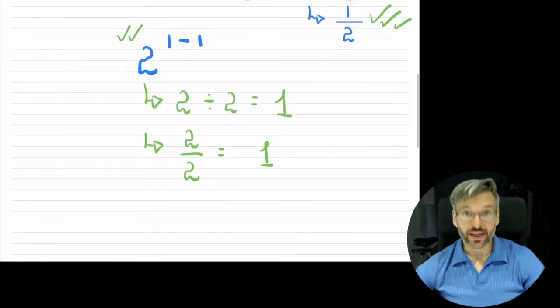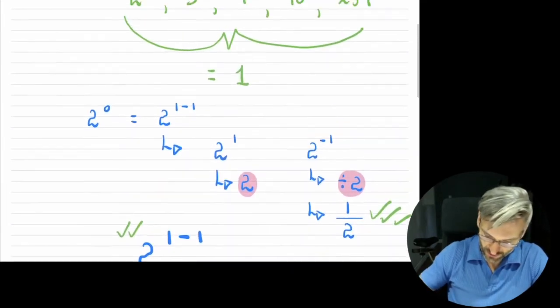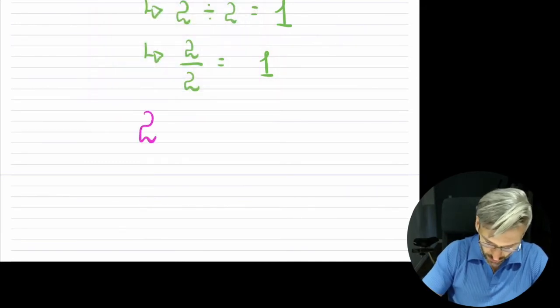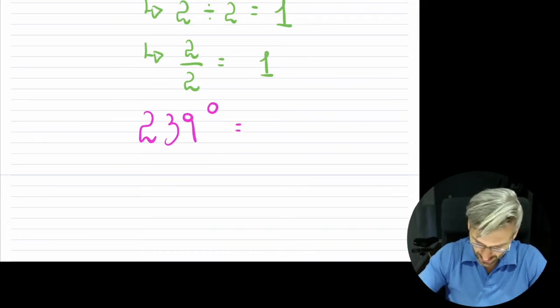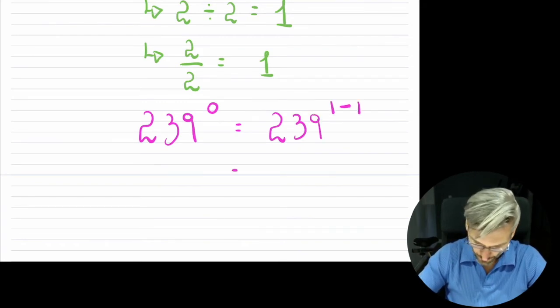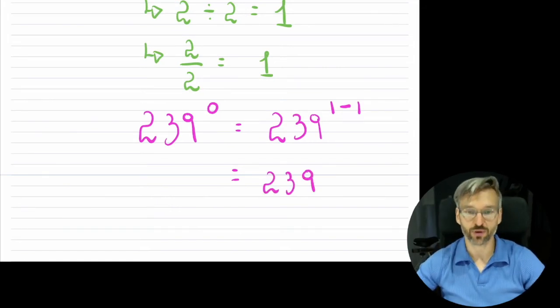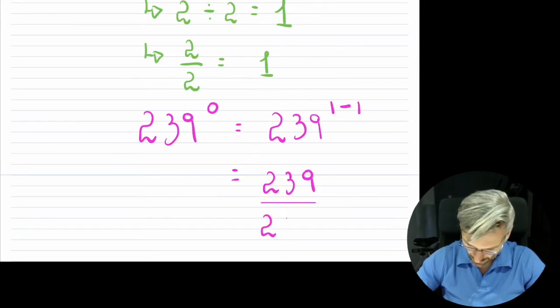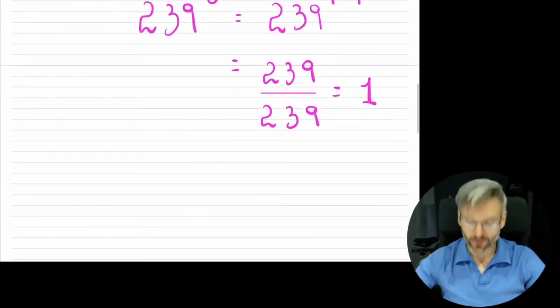Now, you can do that with any number. So if I took one of these last ones right here, let's say 239. So if I had 239 to the power of zero. This, again, you could rewrite as 239 to the one minus one. And that would just simply mean 239, which is 239 to the power of one. And then divided by 239, because that's the negative one. So this would be that. And, of course, it equals to one. So that's what we would have.